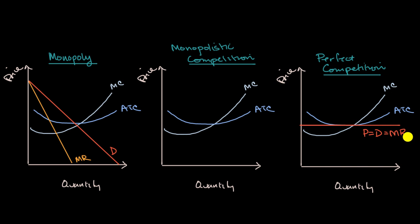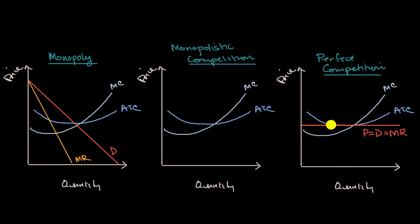In the long run under perfect competition, none of these firms are going to be able to make an economic profit. If they are, there are going to be more entrants, which will push this price down. And if they're making negative economic profit, then people are going to exit, which is going to push this line up. So in the long run, none of the firms are making economic profit.